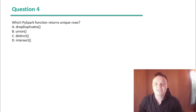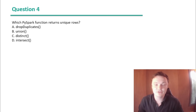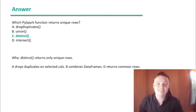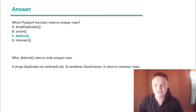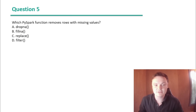Question 4: Which PySpark function returns unique rows? A. dropDuplicates. B. union. C. distinct. Or D. intersect. The answer is distinct — it returns only unique rows. dropDuplicates removes duplicates on selected columns, union combines data frames, and intersect returns common rows.